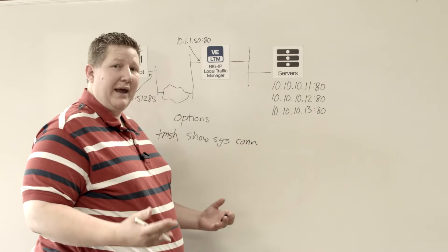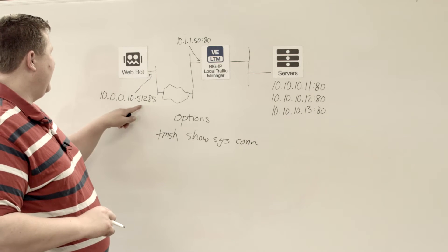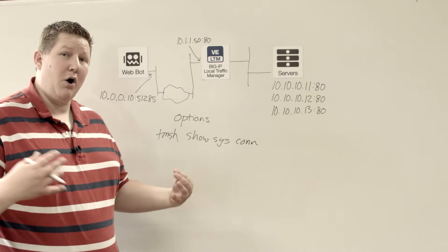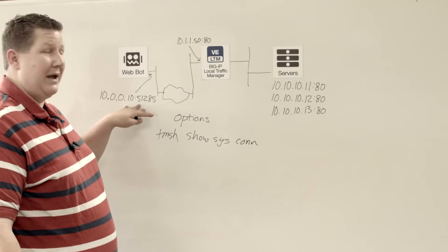And then you might have some options to limit that. For example, I've got this web bot coming from 10.0.0.10:51285. And I want to see all the connections specific to this IP and port combination.